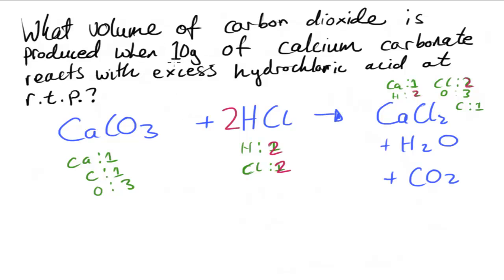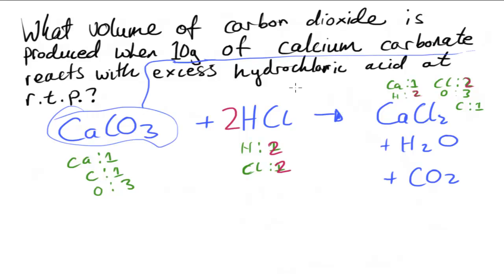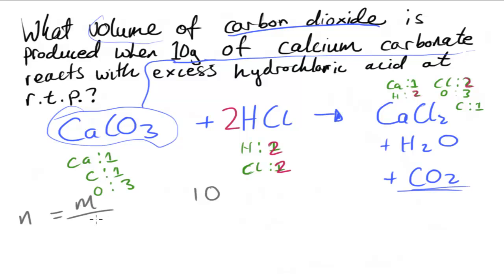Now we have the mass of calcium carbonate which reacts, and we're trying to find the volume of CO₂ produced. The first thing I'm going to do is work out the number of moles of calcium carbonate reacting. We have a mass of 10 grams, and using the equation: number of moles = mass divided by molar mass, we can work out the moles from the periodic table.